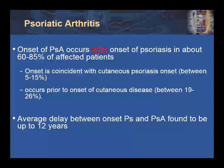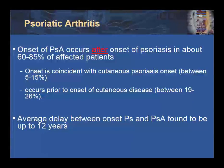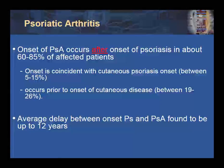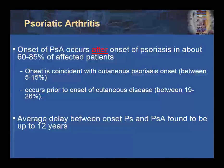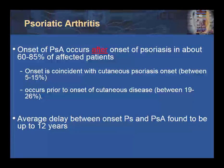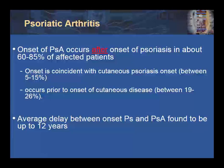Importantly, psoriatic arthritis will begin in the majority of patients after the onset of cutaneous psoriasis, with some studies showing this pattern occurs in upwards of 85 percent of all patients. There are small subsets who will develop psoriatic arthritis coincident with or even before the onset of cutaneous psoriasis. Studies have found that the delay between onset of psoriasis and psoriatic arthritis can be as high as 12 years on average.